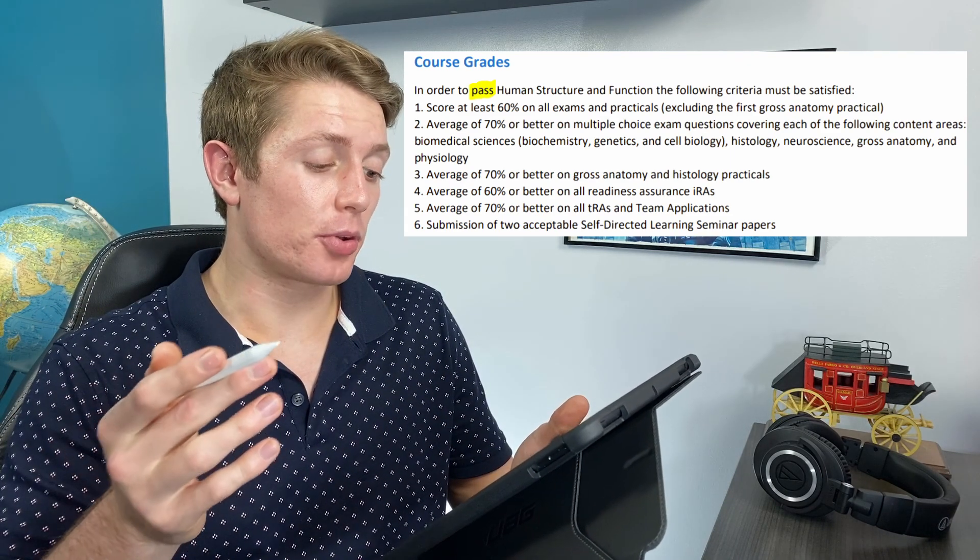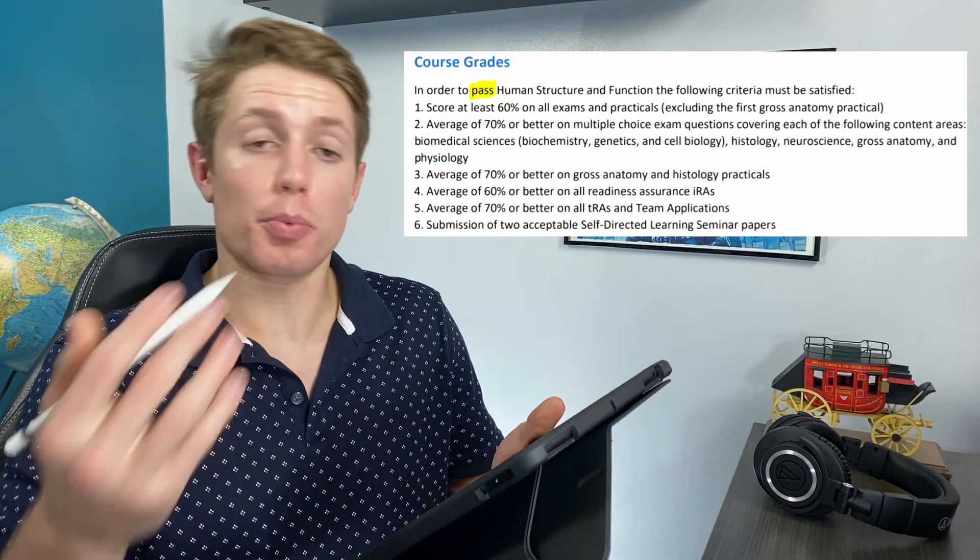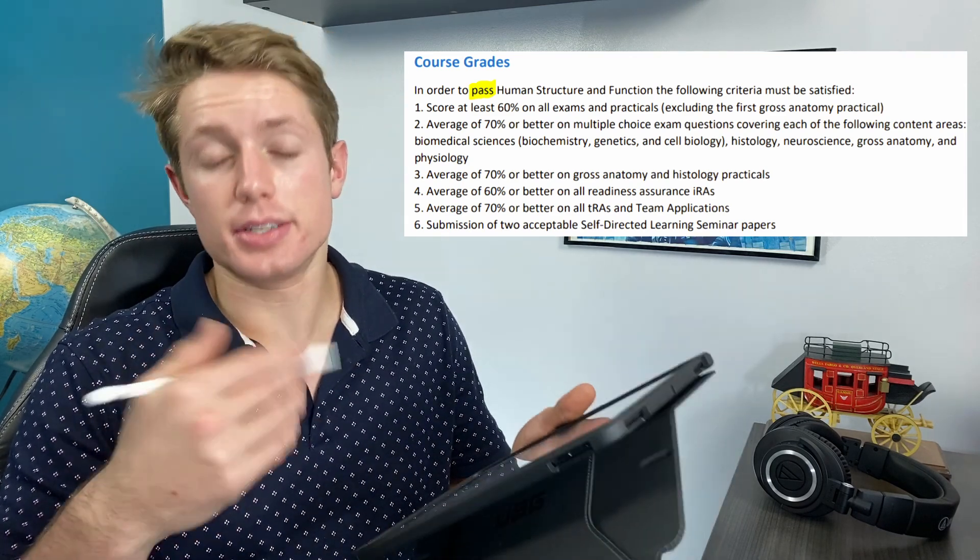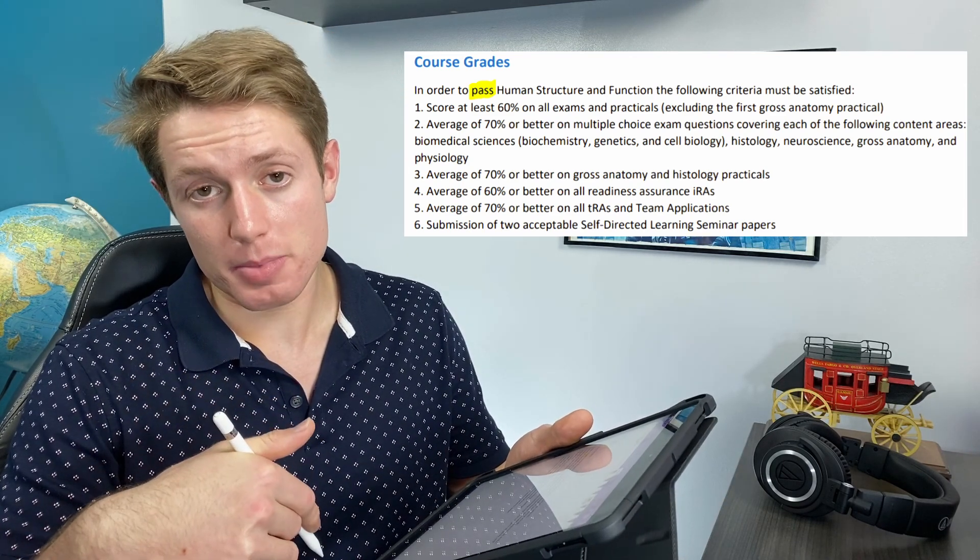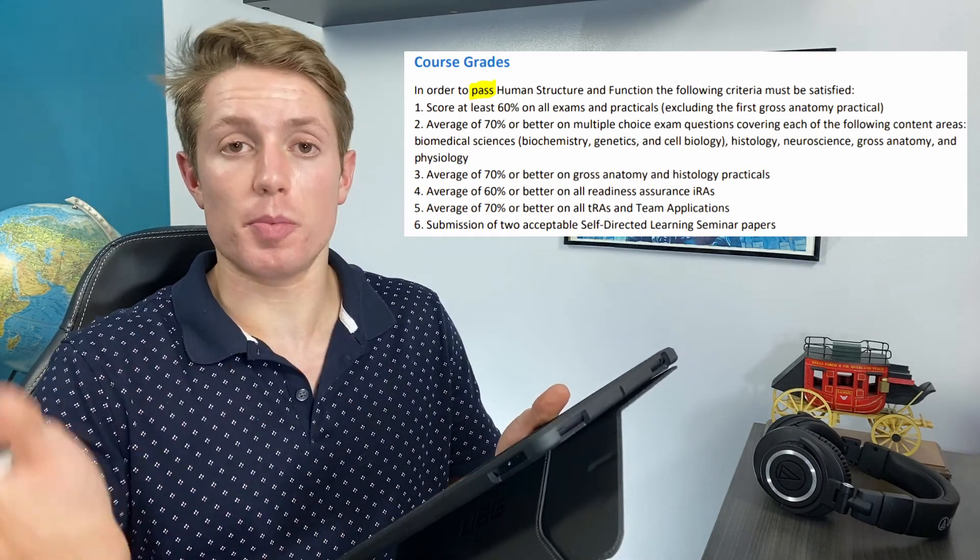And so then requirement number three is average of 70% or better on gross anatomy and histology practicals. This is now the practical section. So this last exam round I had a histology practical. The exam round before that I had an anatomy practical. This next one I have an anatomy practical. So that's sort of separate from the multiple choice exams.